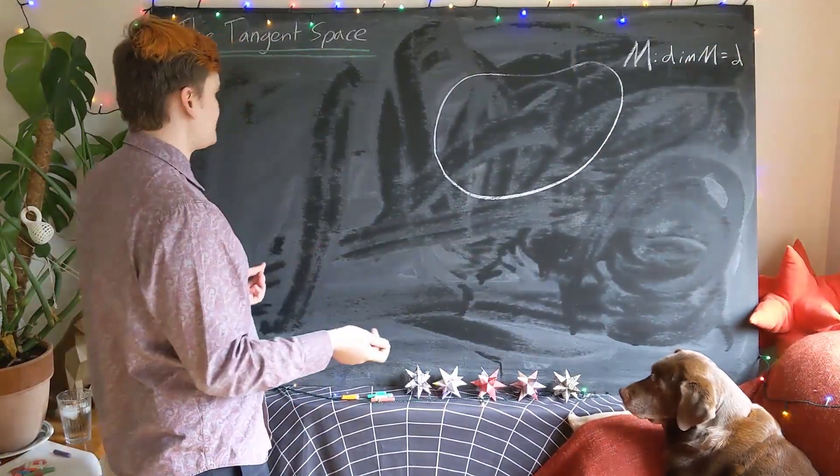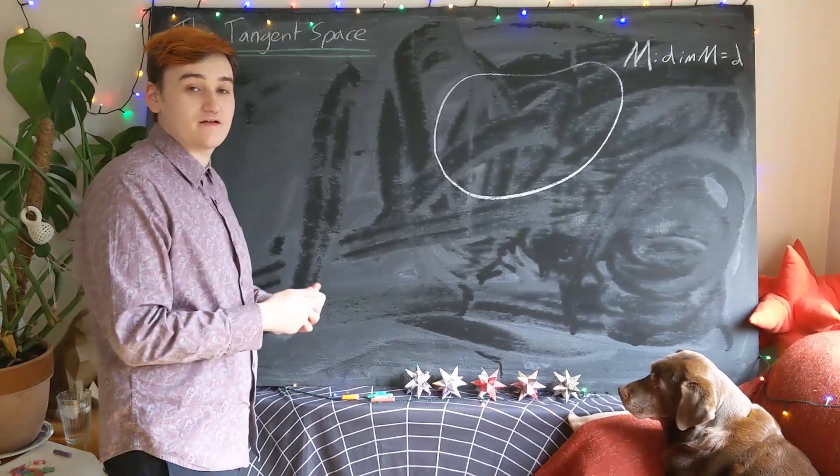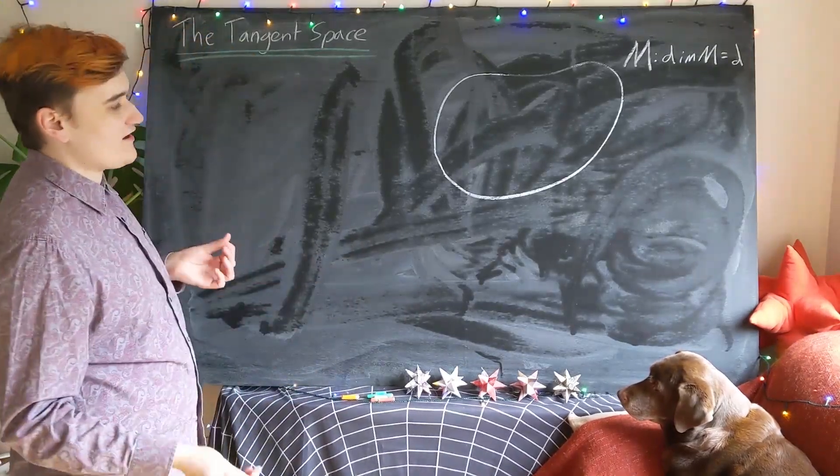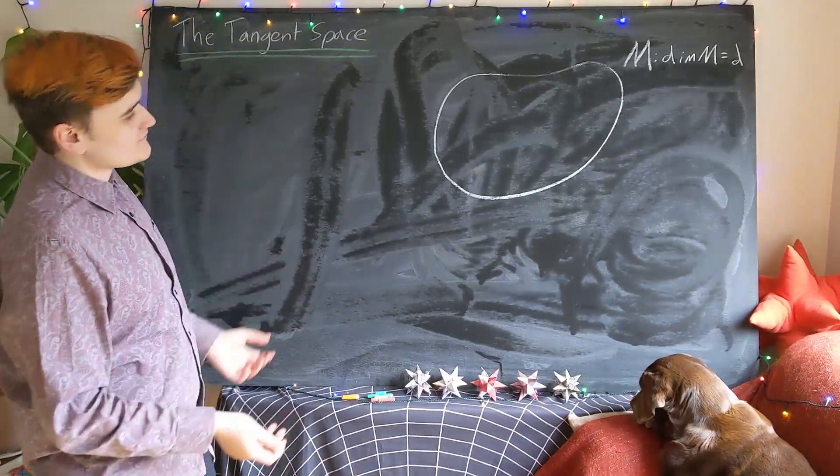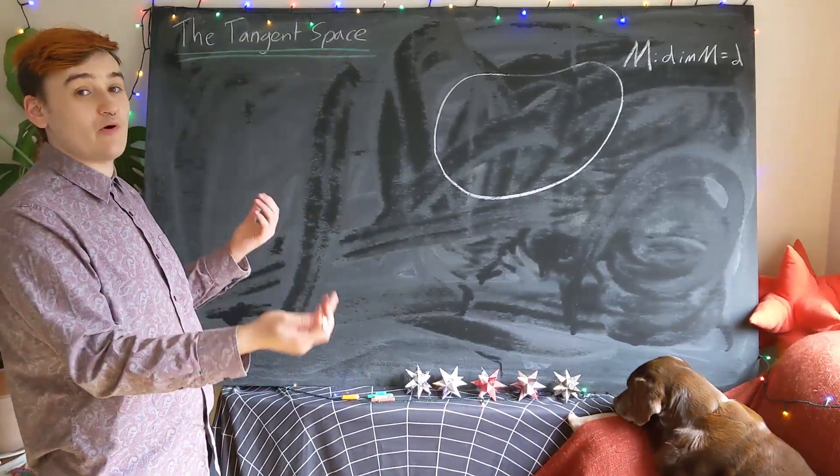Okay, so now we want to go about constructing the tangent space. To get an idea of how we're going to do this, let's first discuss what the tangent space is. Well, it's essentially a vector space that lives at every point in the manifold.